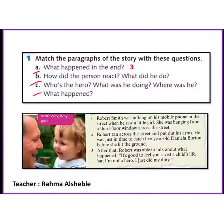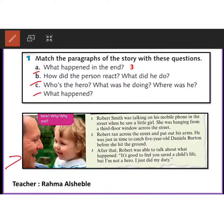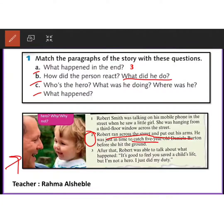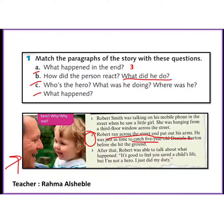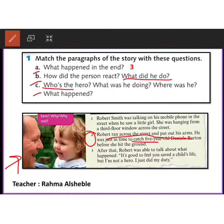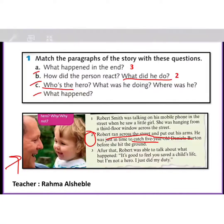Question two: how did the person react? How did Robert react, what did he do? Which paragraph answered this question? The answer is paragraph two — it tells us he ran across the street, put out his arms, and was just in time to catch her.